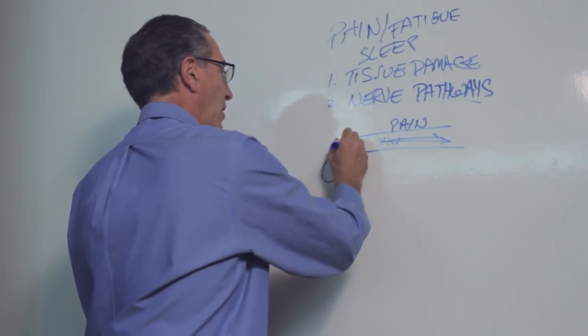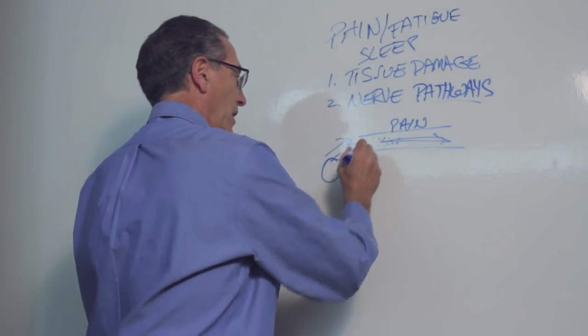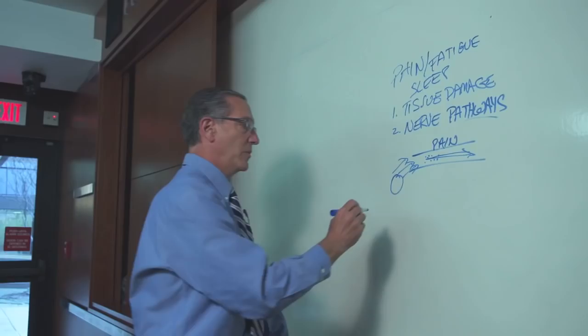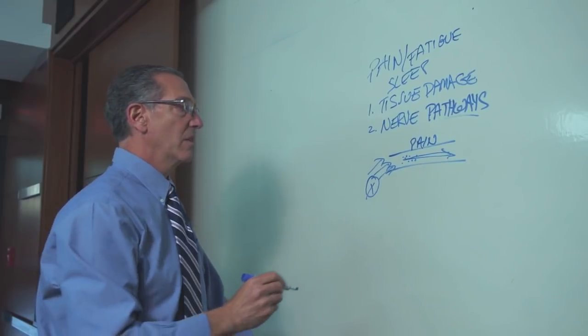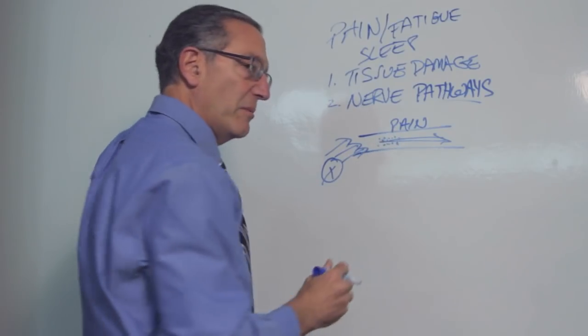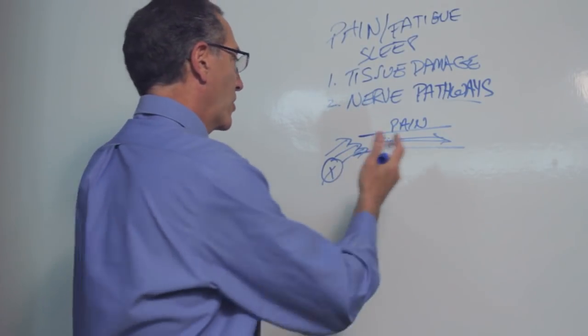When pain is a nerve pathway and other things like fatigue, anxiety, or sleep problems, the brain is activating those pathways and there doesn't have to be any tissue damage to create this.